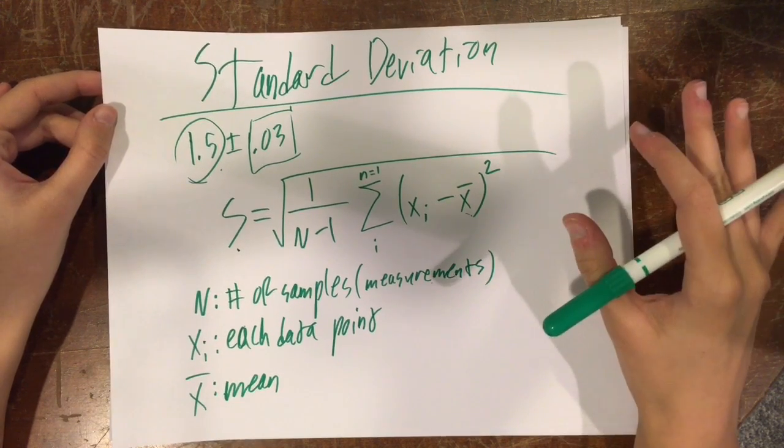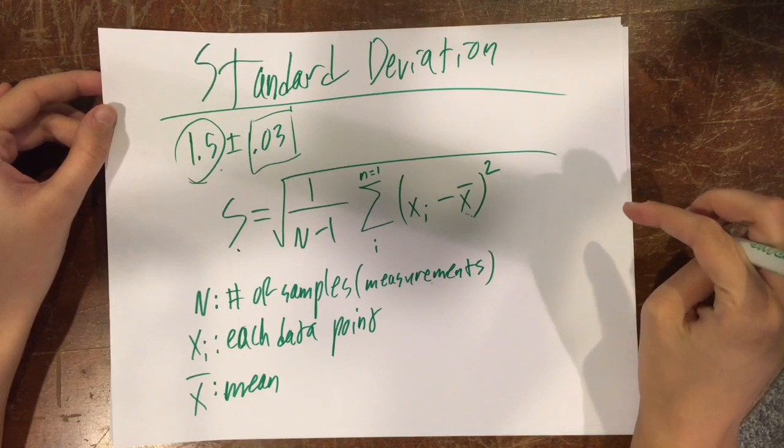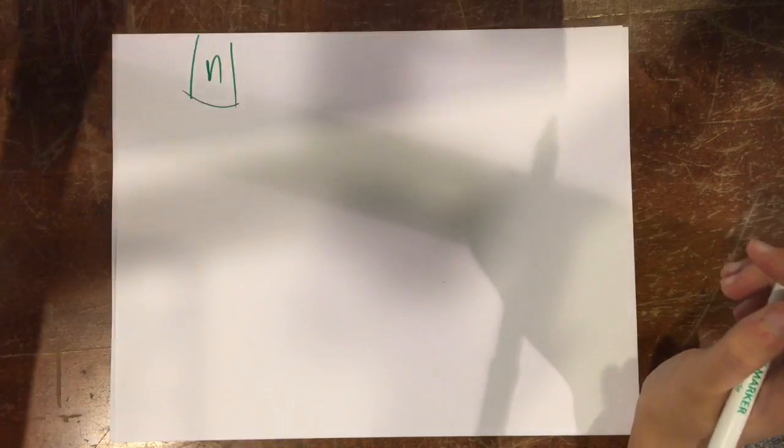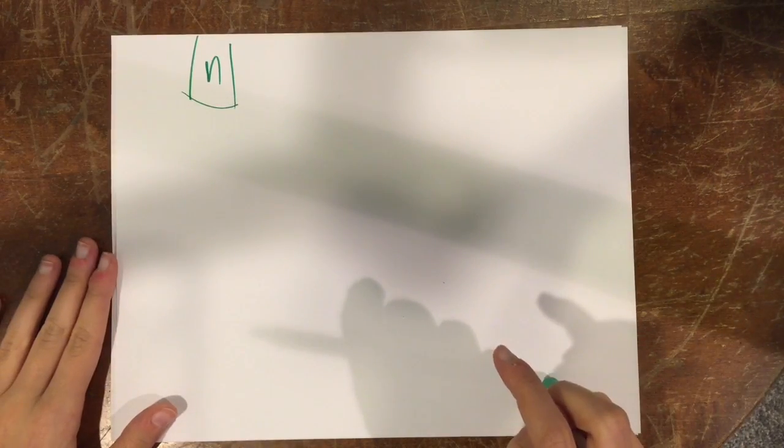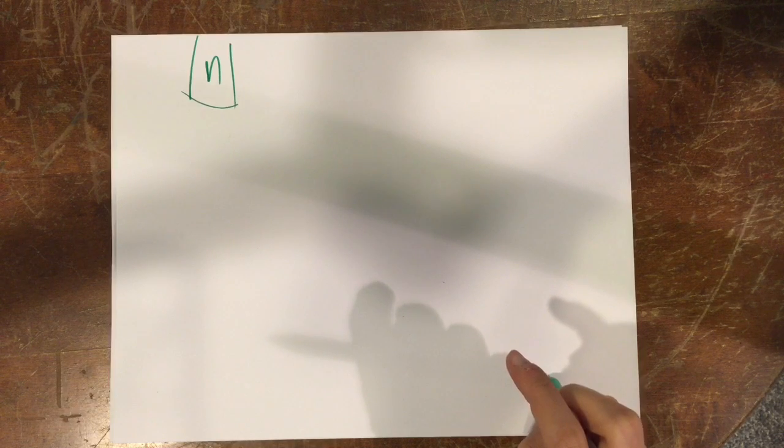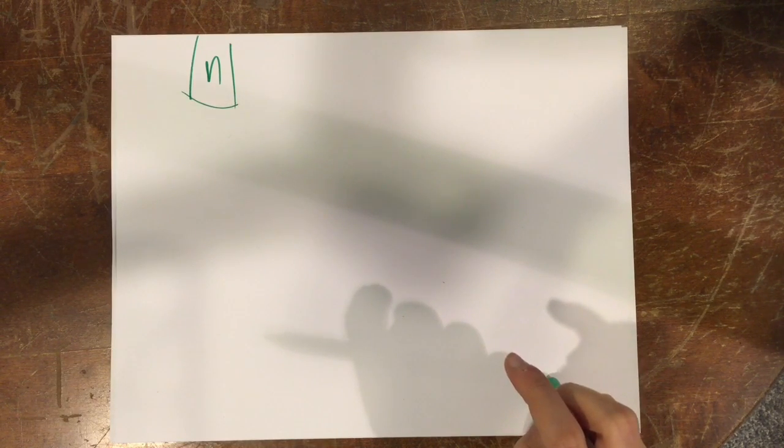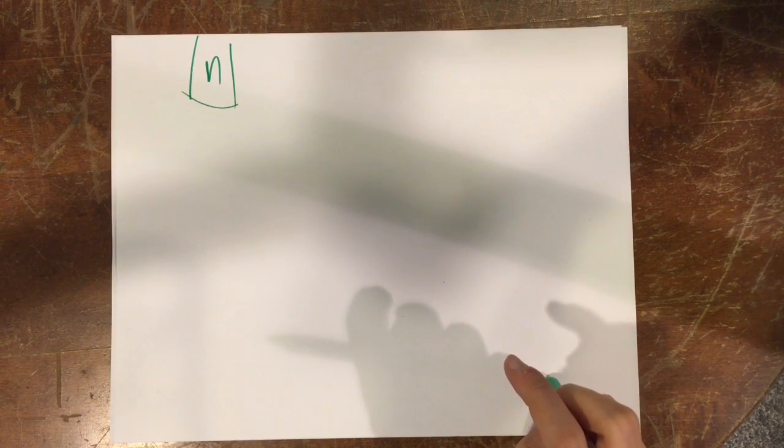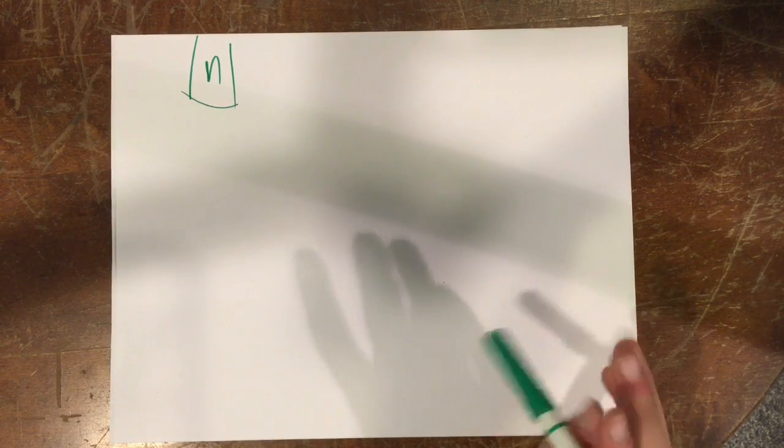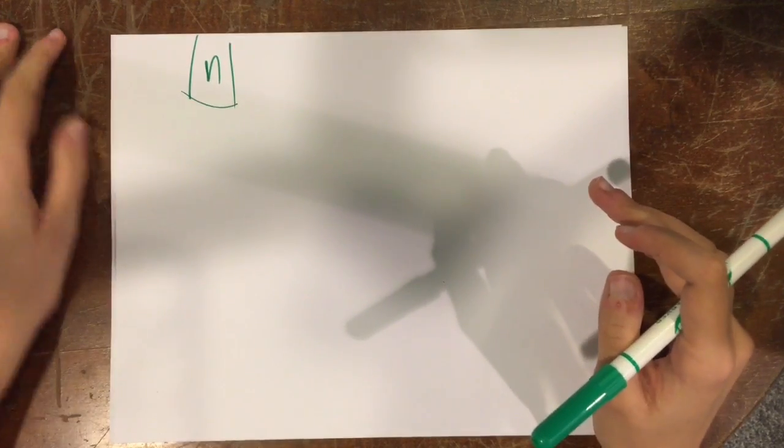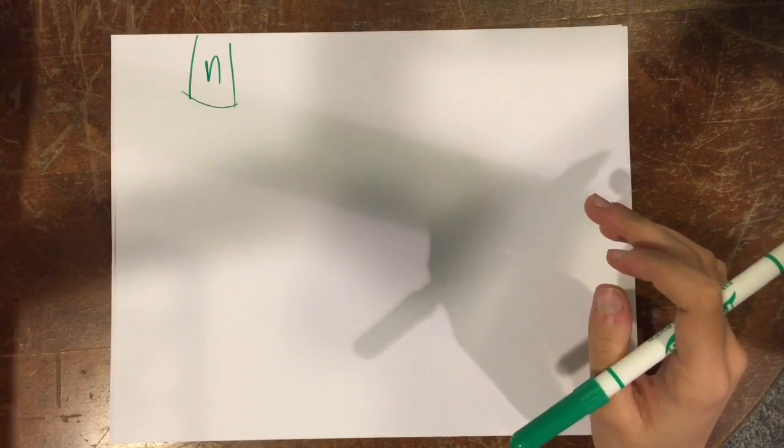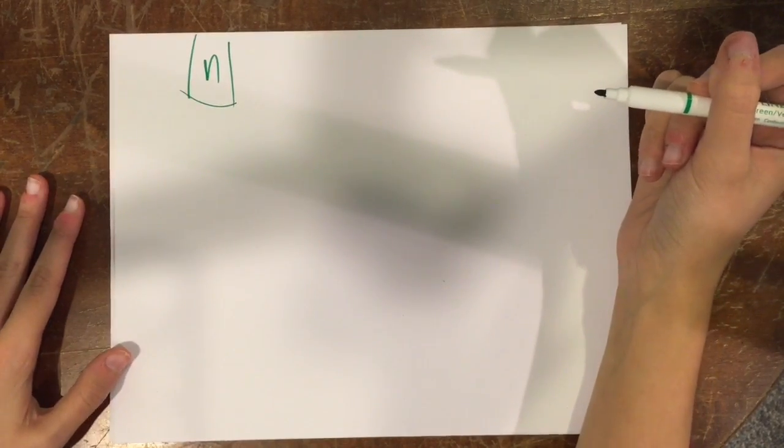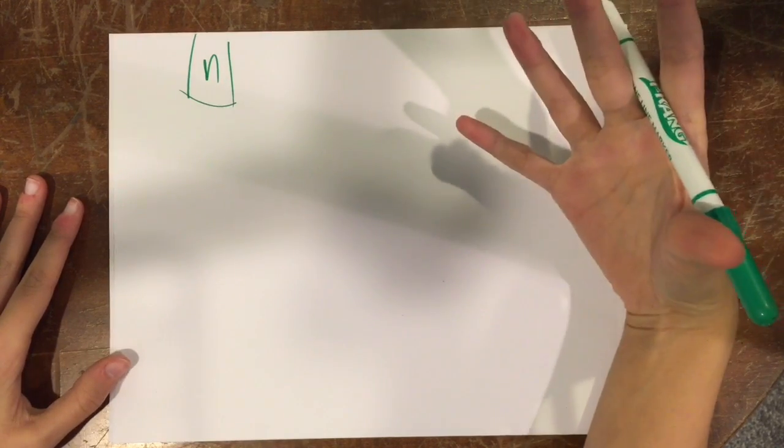But for this example, I'm just going to be doing a small set because it's easier. Okay, so for AP Lab 2, we had to determine B and N on a coffee filter where B is the drag coefficient and N is the exponent. And we had to perform error on N. So what I'm going to do is a little example where we're just going to pretend that we don't know the accepted value of N, but we still have to do error on it.